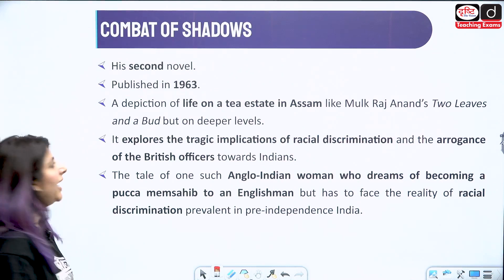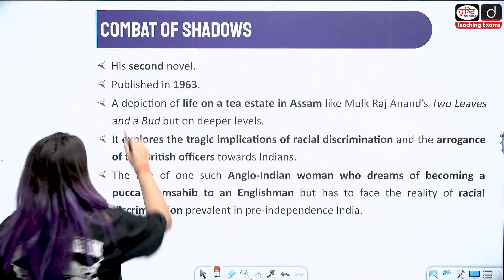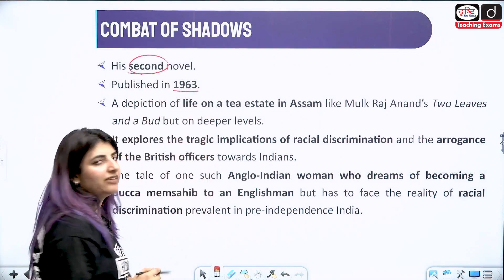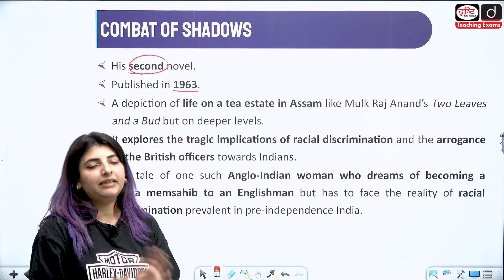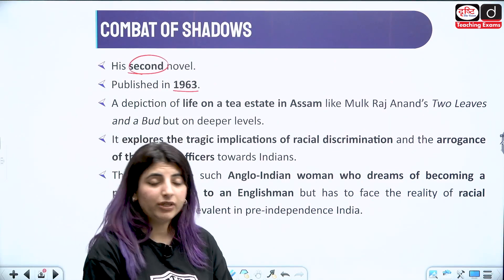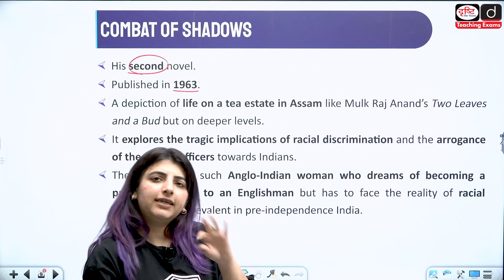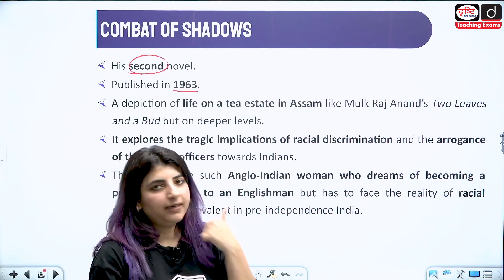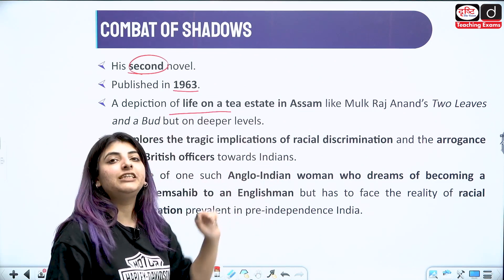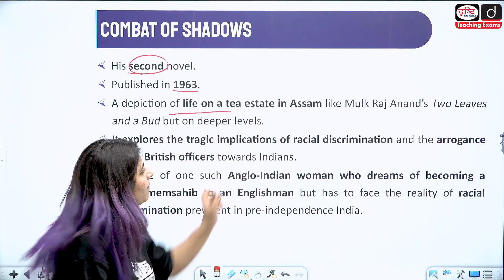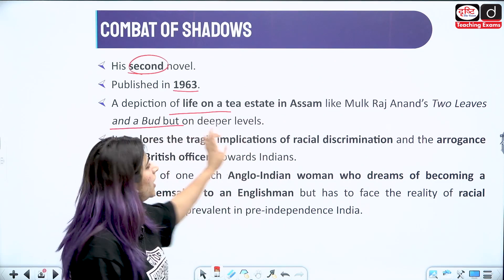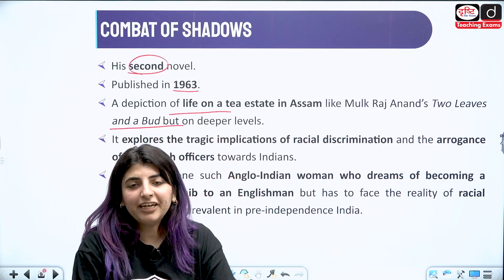The next work is Combat of Shadows — his second novel, published in 1962-63, both years are counted as correct. It's a depiction of life on a tea estate, just like Mulk Raj Anand's Two Leaves and a Bud, but on a deeper level.